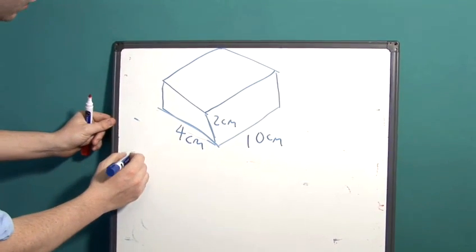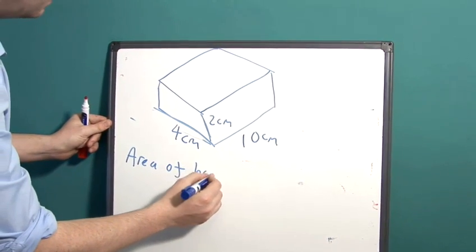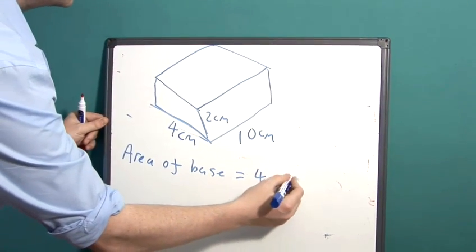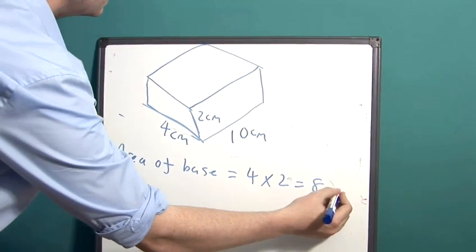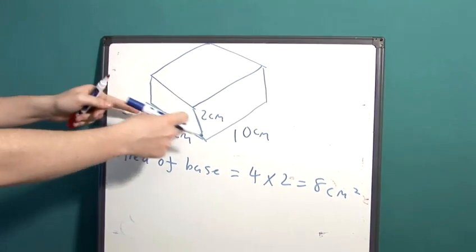So that means that the area of our rectangle, or our base shape, is 4 multiplied by 2, which is 8cm squared, because we're dealing with an area. So we're now in two dimensions.